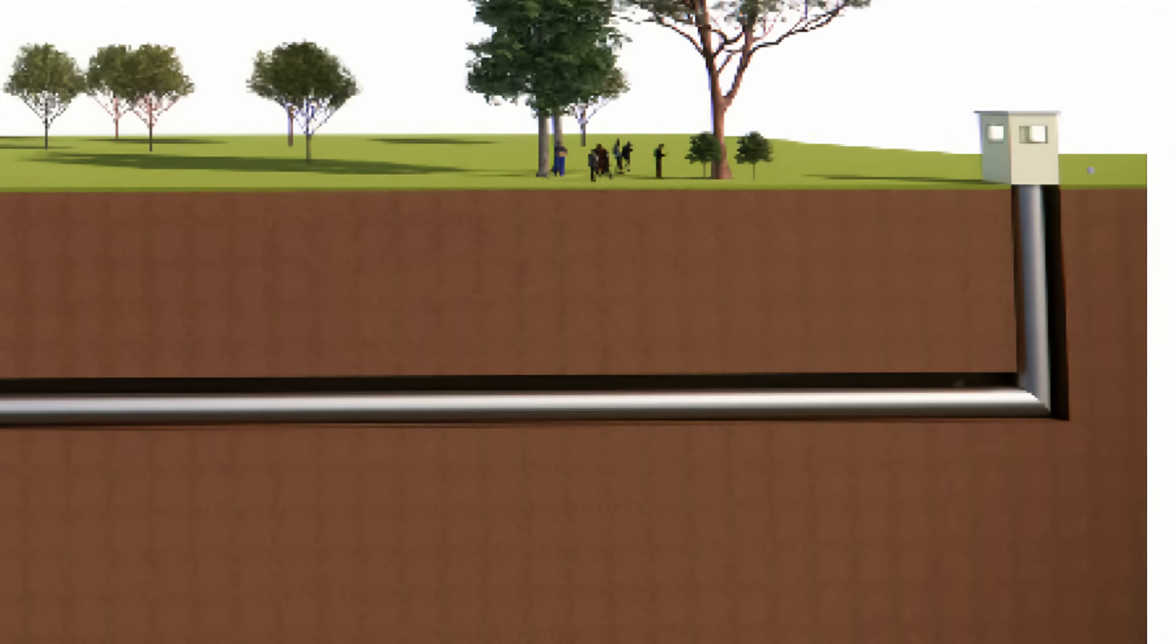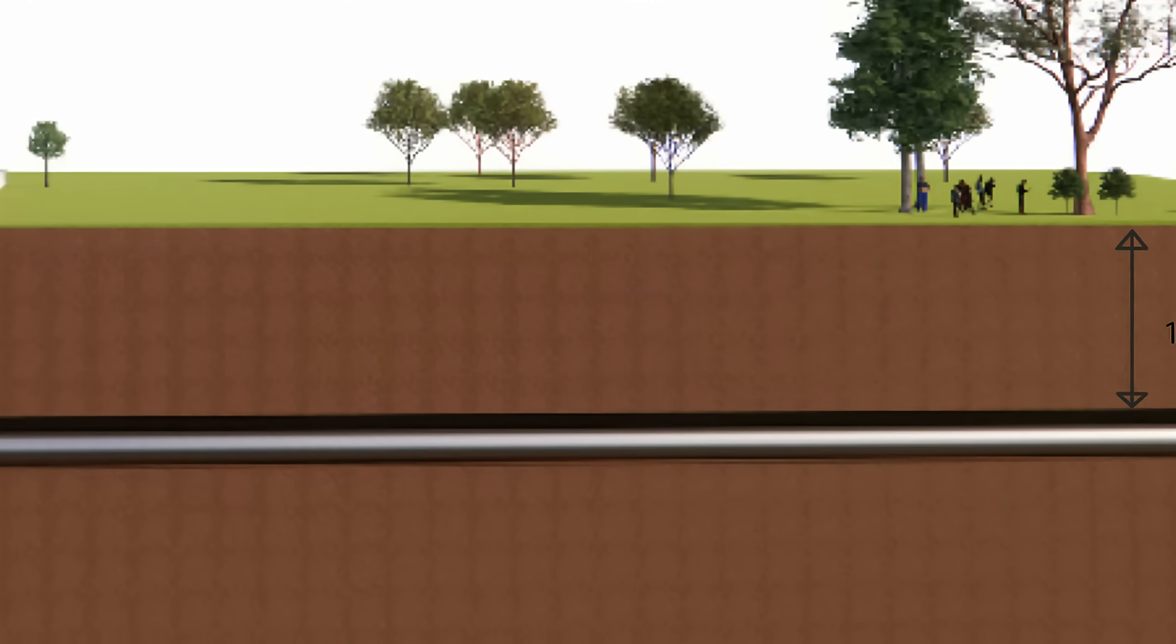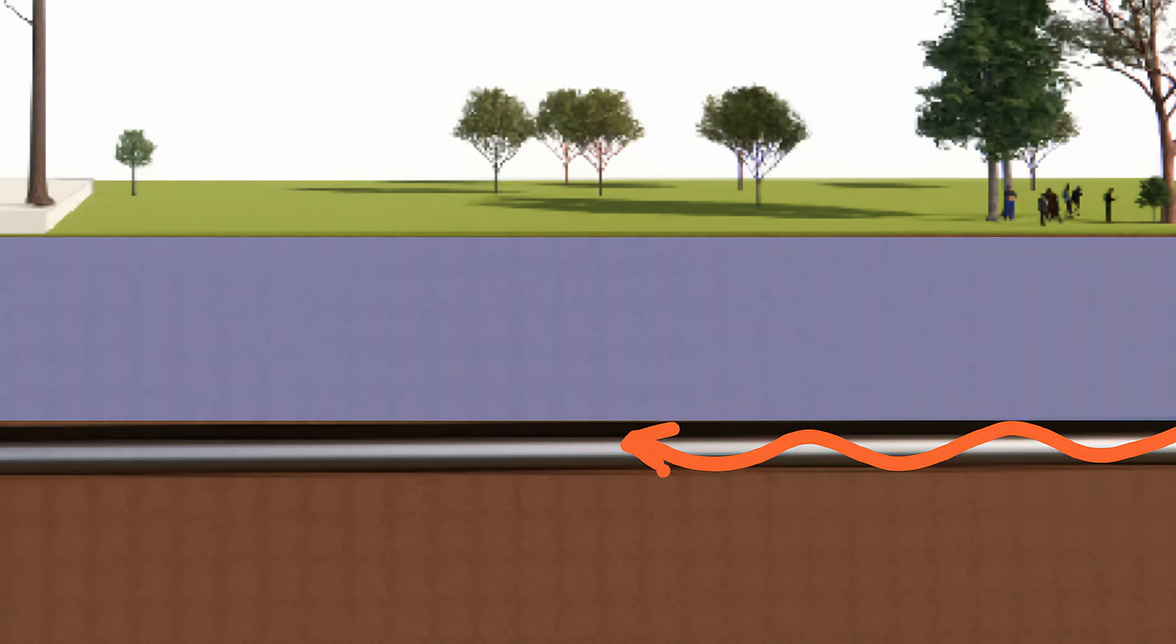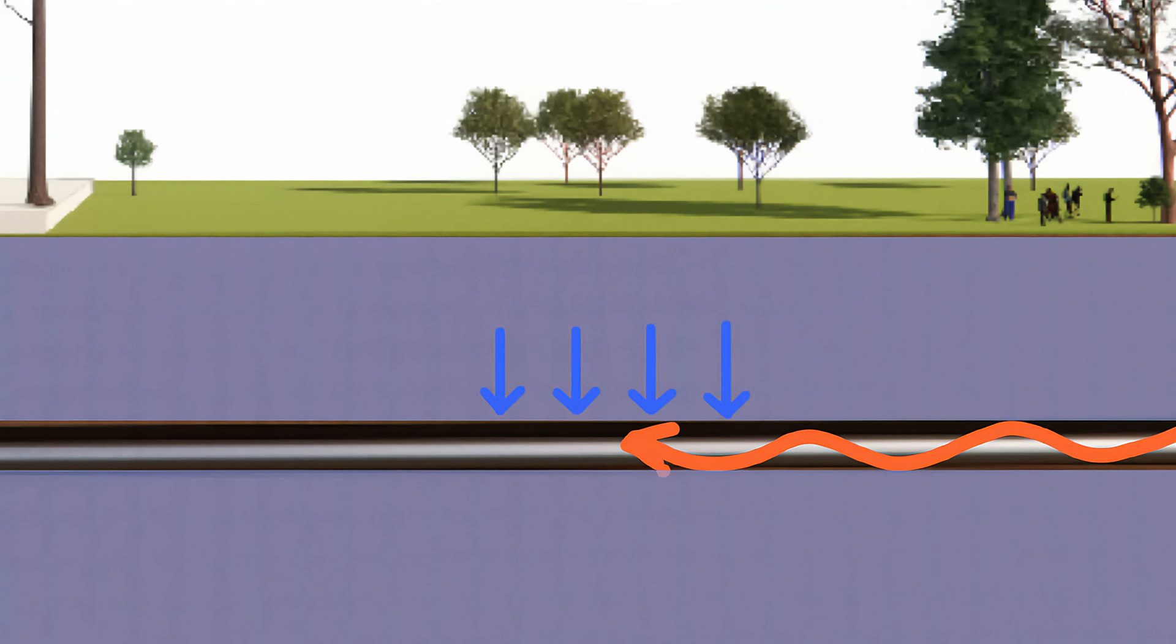The air then travels through a network of underground pipes buried 1.5 to 3 meters deep. As air moves through the underground pipes, heat is transferred between the air and the surrounding soil. The longer the air stays underground, the more it adjusts to the soil temperature.